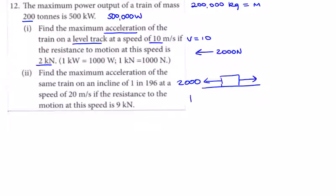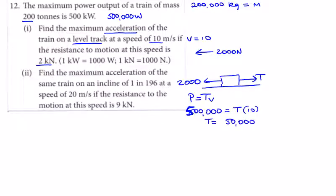The tractive effort drives the train forward. Power equals tractive effort times speed. The power given is 500,000 watts, which equals the tractive effort multiplied by the speed of 10, so the tractive effort must be 50,000 newtons.